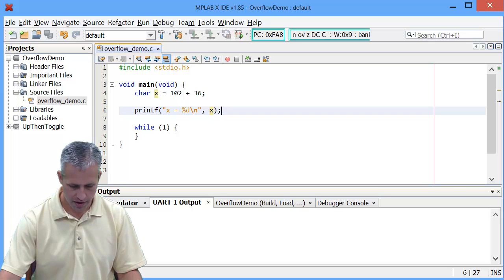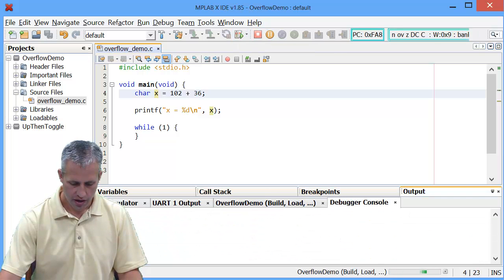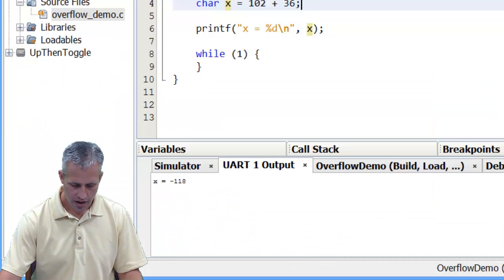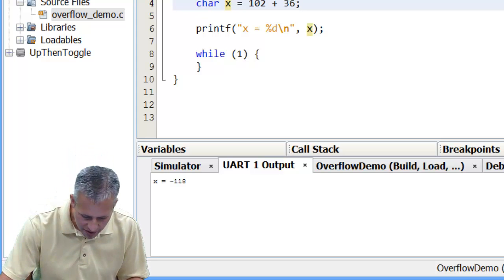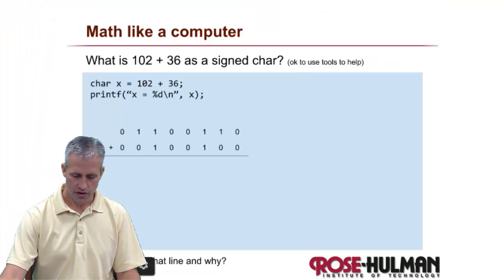So here I just wrote those two lines. So 102 plus 36, print it. So if I hit debug and run and look at my UART1, if your eyes are really good, it says negative 118. What on earth?